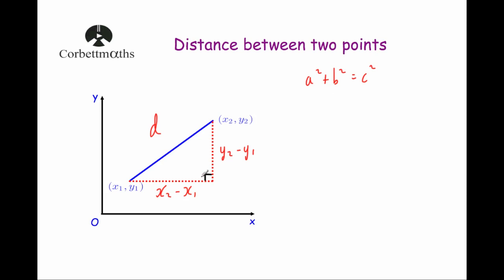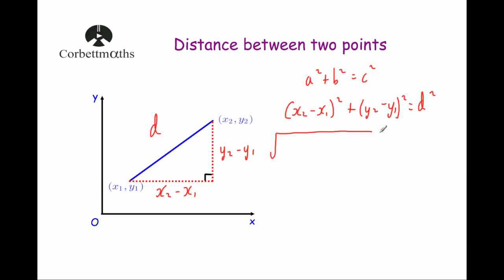So a squared — that's one of the shorter sides — is going to be x2 minus x1, squared. Plus the other shorter side, which is y2 minus y1, squared. And that's equal to the hypotenuse squared, which is d squared. We don't want d squared, we want d, so we're going to square root both sides, giving us d equals the square root of x2 minus x1 squared plus y2 minus y1 squared.